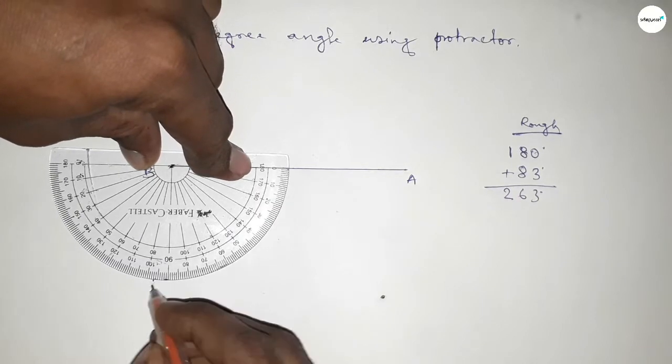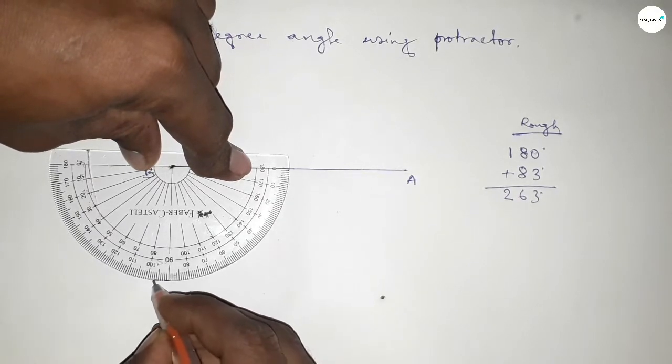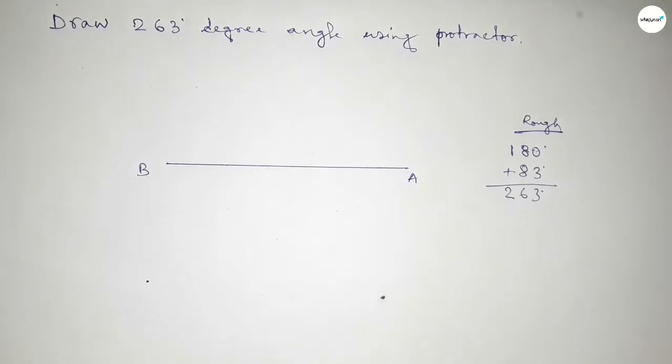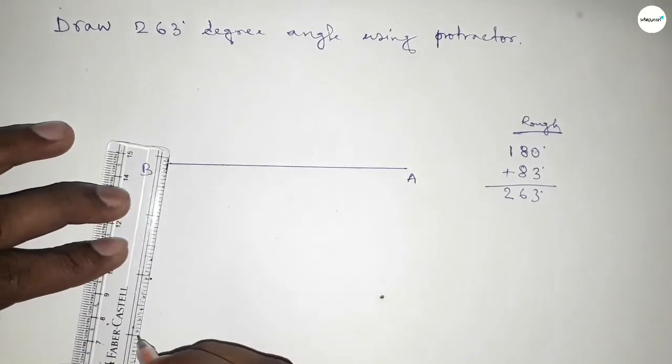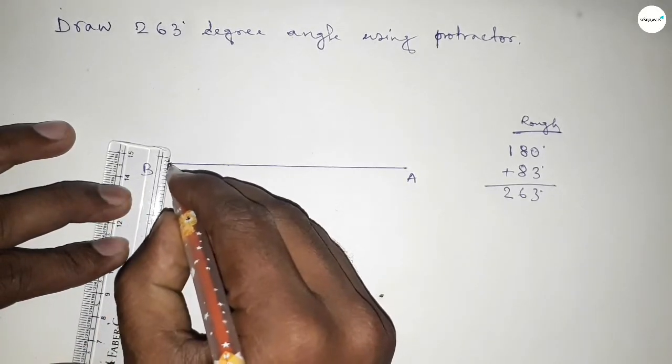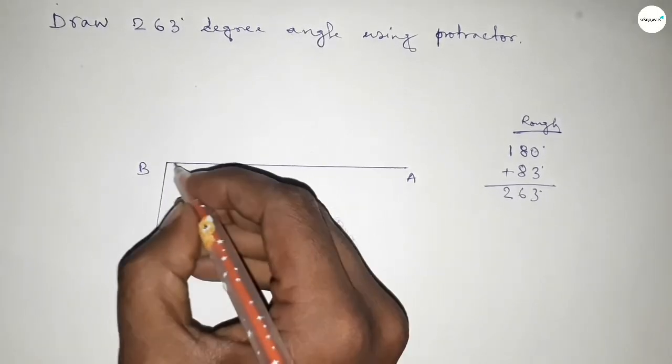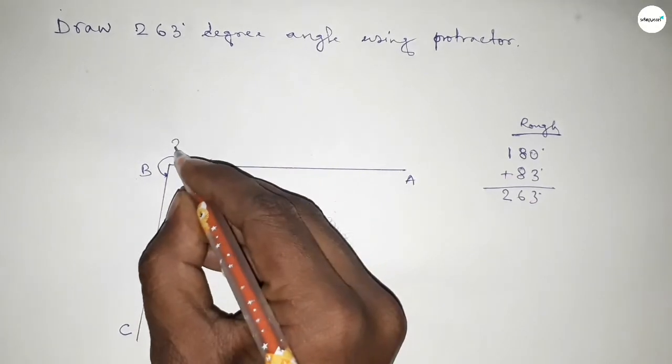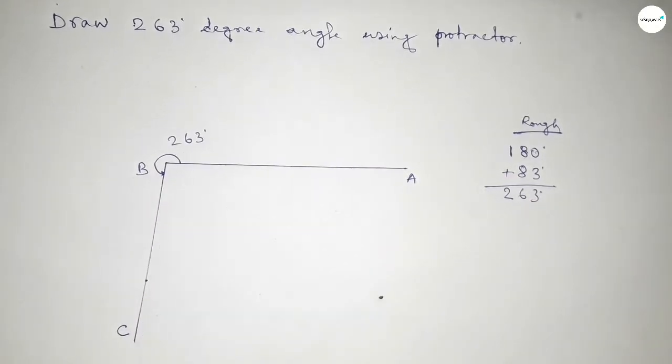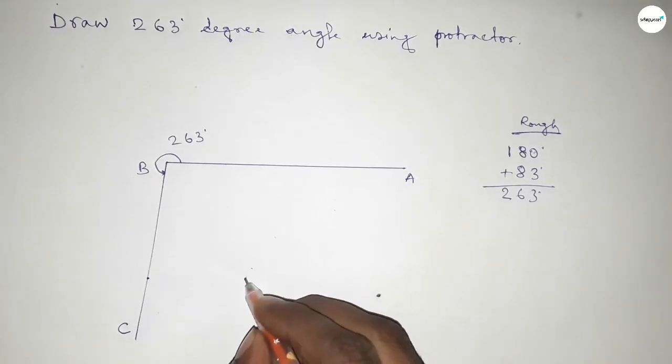So if you add 83-degree angle with 180 degrees, then we can get 263. So taking here C point, and angle ABC up to this, this is 263-degree angle.